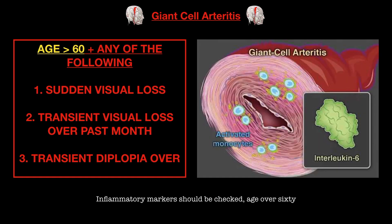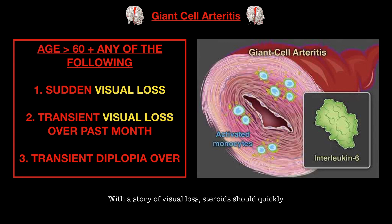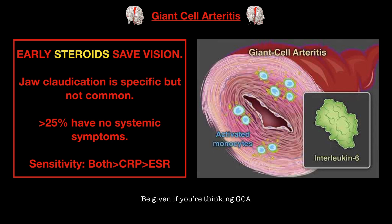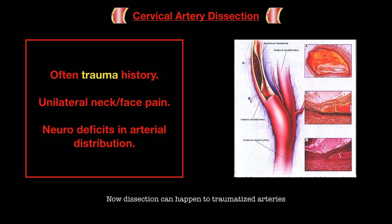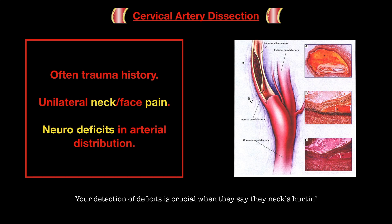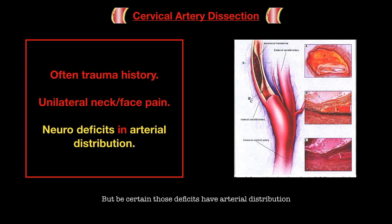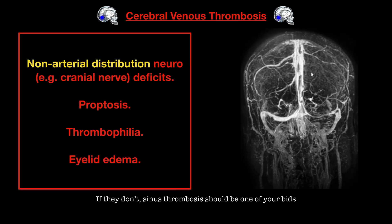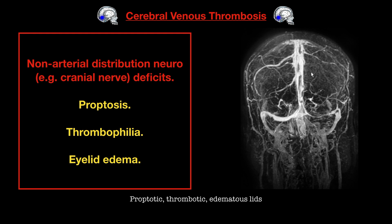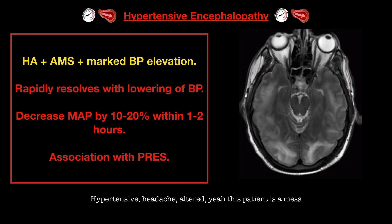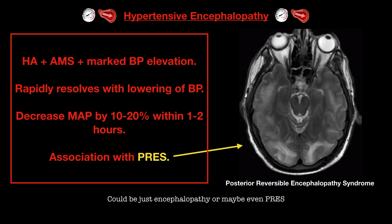Inflammatory markers should be checked — age over 60 with that story, vision loss — steroids should quickly be given if you're thinking GCA. Now dissection can happen to traumatized arteries. Your detection of deficits is crucial when they say their neck is hurting, but be certain those deficits have arterial distribution. If they don't, sinus thrombosis should be one of your bids — proptotic, thrombotic, edematous lids.